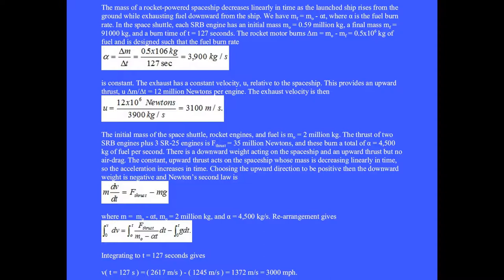The exhaust has a constant velocity u relative to the spaceship. This provides an upward thrust equals 12 million newtons per engine. Solving for the exhaust velocity we get u equals thrust divided by alpha equals 3100 meters per second. The initial mass of the space shuttle rocket engines and fuel is m0 equals 2 million kilograms.